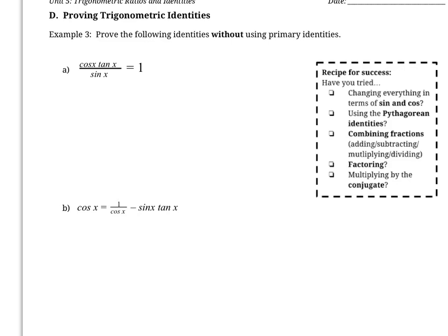Now we're going to practice proving identities without using the primary identities. Instead, we'll use our knowledge of reciprocal identities, our property that tan equals sine over cos, and the Pythagorean identities. Some useful strategies: change everything in terms of sine and cos; try the Pythagorean identities if they apply; combine any fractions by adding, subtracting, multiplying, or dividing; and also try factoring or multiplying by the conjugate. When you get stuck, check this list for anything you haven't tried yet.